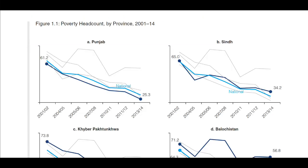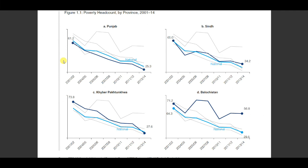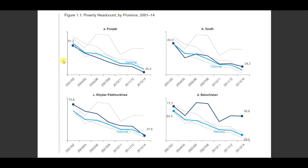We will also see a south-north divide, which we looked at in lecture 13 as well. These four trend lines — they are the same graph but shown in four different graphs to make it more readable. The light blue line is the national drop in poverty from 2001-02 to 2013-14, and all the other lines are provincial level lines. In figure 1.1a, the bolded line is for Punjab.